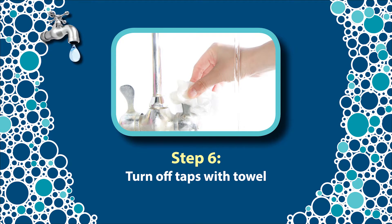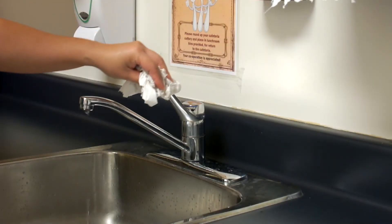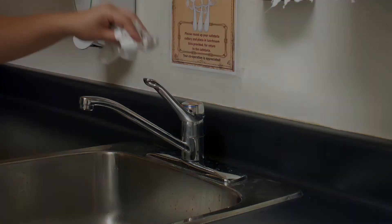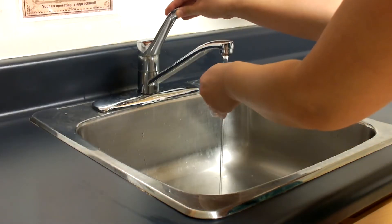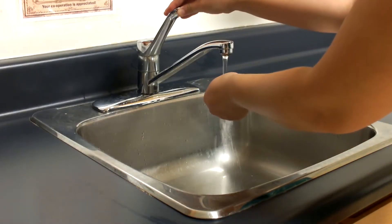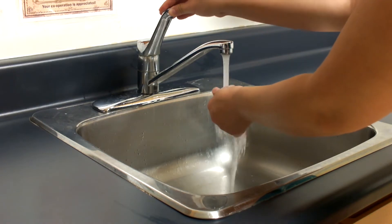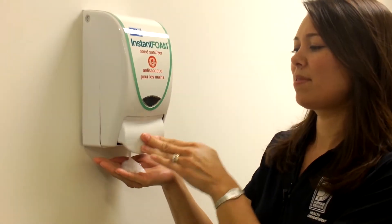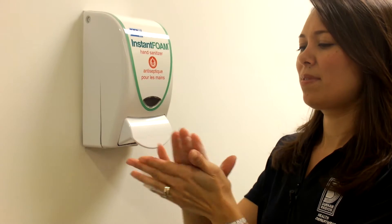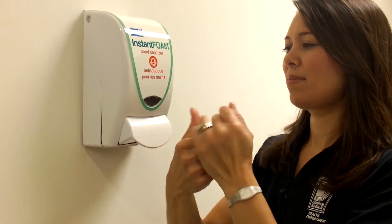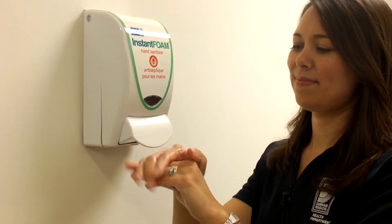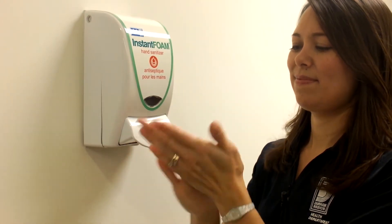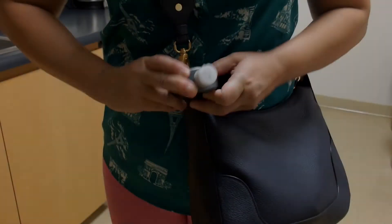Step 6: Turn off the taps using the paper towel. If you're at home, you can use a clean cloth or towel. If you don't have access to a sink and water, the next best way to reduce germs is by using an alcohol-based hand sanitizer. It's easy to use and convenient. Most public places have dispensers now, or you can even carry one in your bag or purse. Here is the proper technique.